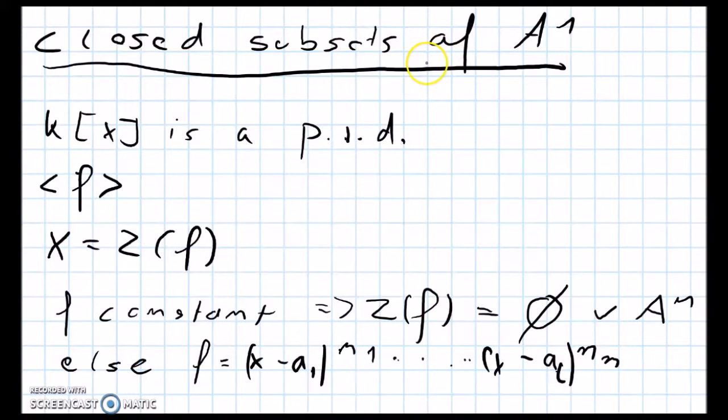We are going to look at closed subsets of A¹, meaning closed in the Zariski topology we introduced in the second lecture.